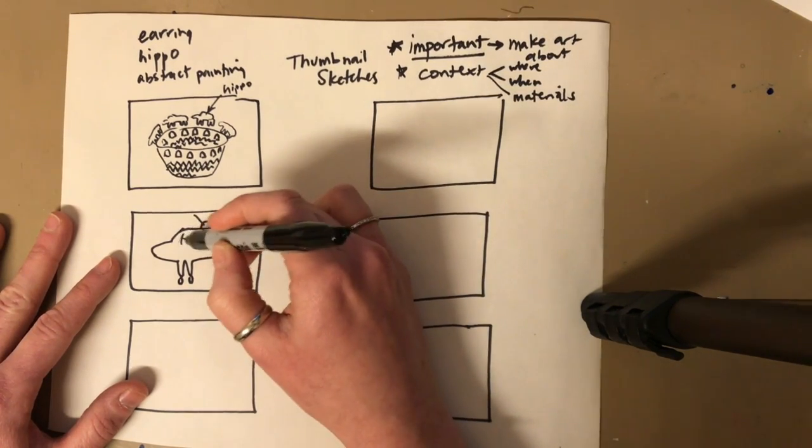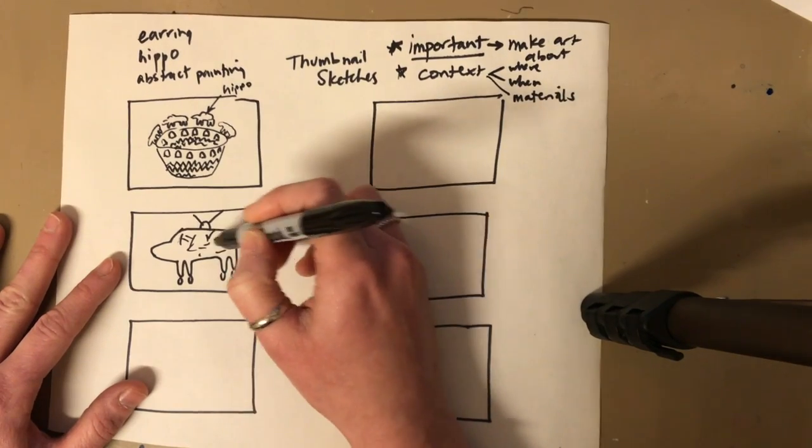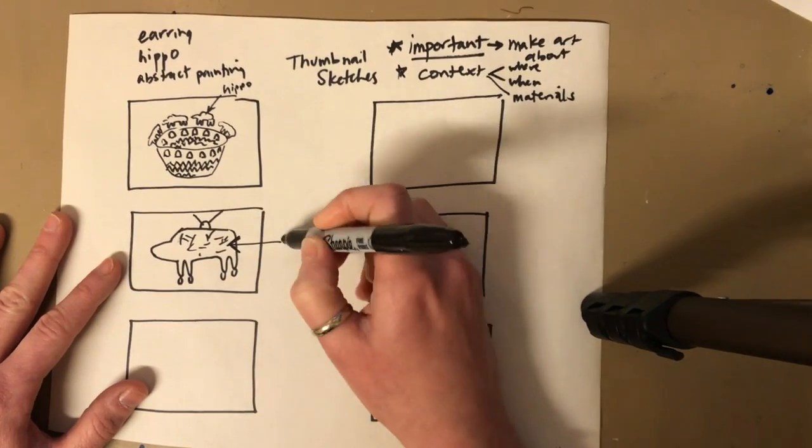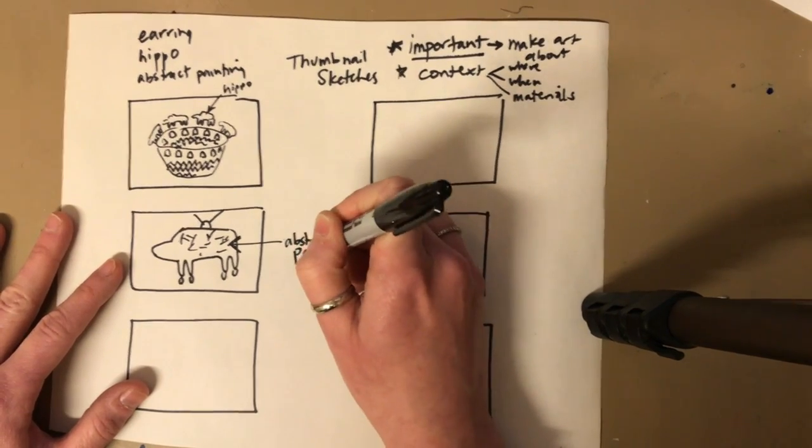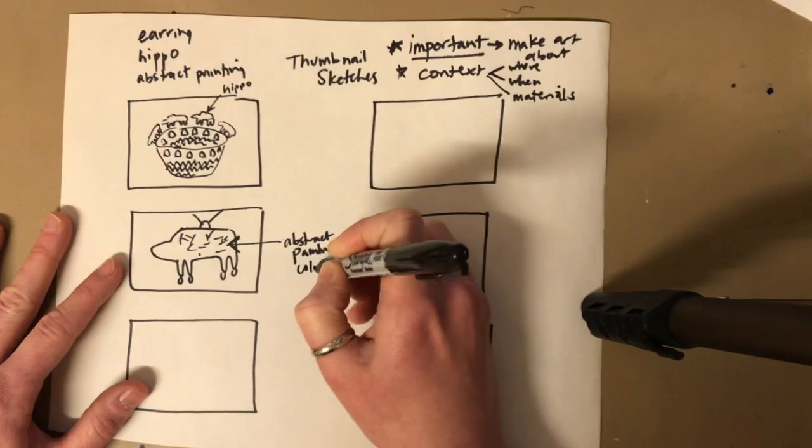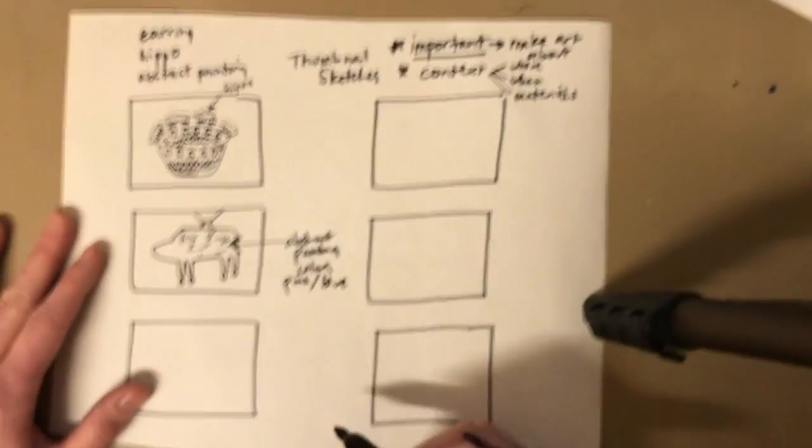But then it's also heavily colored, like the abstract painting. Now this is hard to understand, so I'm gonna label it. Maybe pink, blue. Labeling colors is a good idea too.